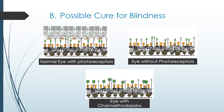Another very important application is that optogenetics can be a possible cure for blindness. A normal human eye has photoreceptors which respond to light stimuli, but a blind person lacks these photoreceptors, due to which even though light enters their eyes, they cannot respond to it. So we can implant the light-sensitive protein channelrhodopsin into the eye, and thus the blind person can get their vision back. This technique has been successfully experimented upon mice with positive results.